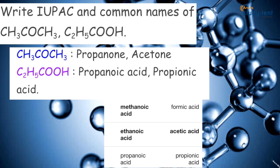Propanone is called by the common name acetone. Now let's take a look at C2H5COOH. Here, C2 is 1 carbon, COOH is 1 carbon — so 3 carbons total. The root word is 'prop', the functional group is carboxylic acid, and the suffix is 'oic acid'. So IUPAC name is propanoic acid, and the common name is propionic acid.